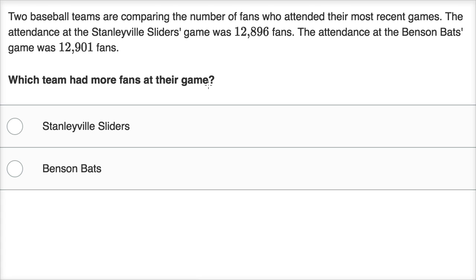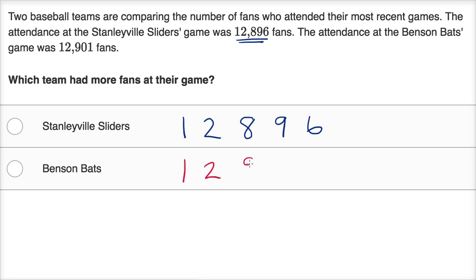Pause this video and see if you can figure it out. Let's work through this together now. The Stanleyville Sliders game was 12,896 — I'm writing it really large — and the Benson Bats game was 12,901.